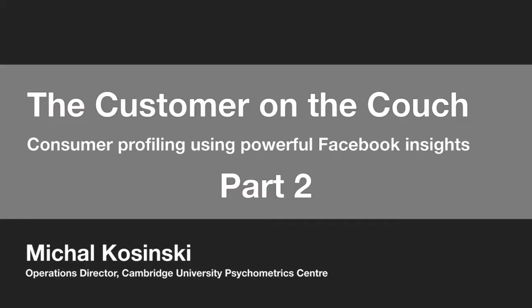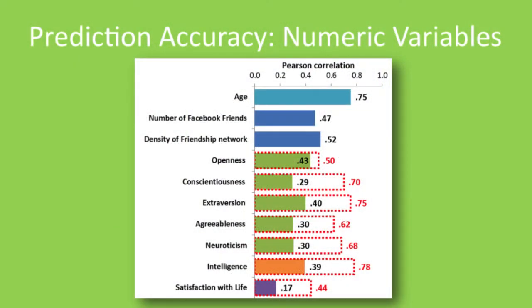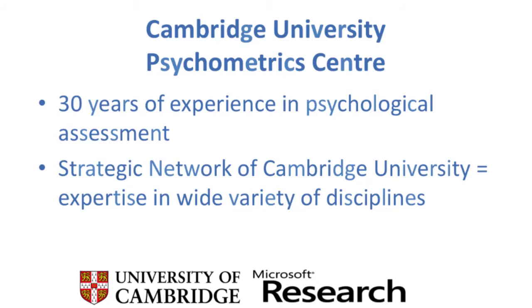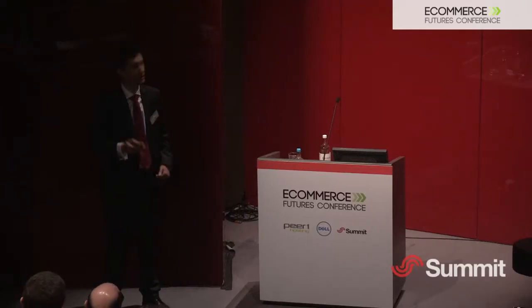Getting access to someone's Facebook profile is equivalent to getting a very in-depth and long psychological interview supported by psychological tools to understand this person better. We used Facebook likes, and we have findings — both at the University and at Microsoft — showing that significantly higher accuracy and a much wider range of traits can be predicted using different kinds of digital footprints.